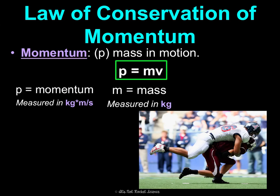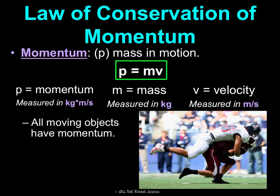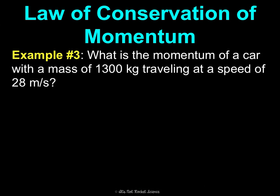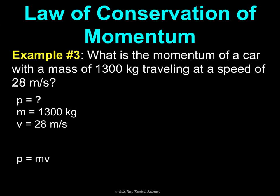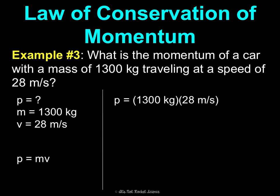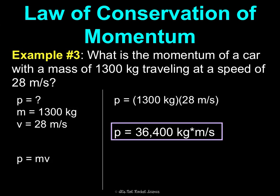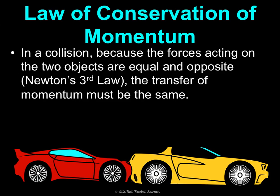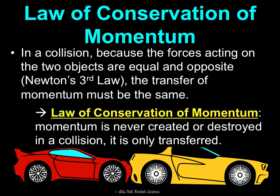All moving objects have momentum, and momentum can be transferred between objects in a collision. For example: what is the momentum of a car with a mass of 1,300 kilograms traveling at 28 meters per second? p = mv = 1,300 × 28 = 36,400 kilograms times meters per second. In a collision, because the forces on the two objects are equal and opposite per Newton's third law, the transfer of momentum must be the same. This is the law of conservation of momentum — momentum is never created or destroyed in a collision, only transferred.